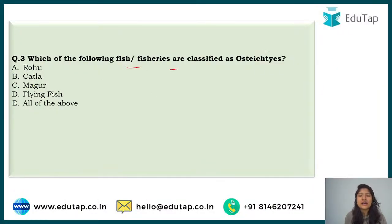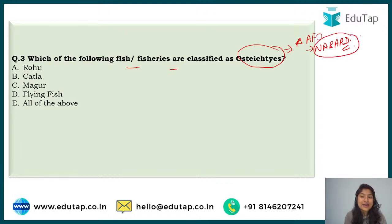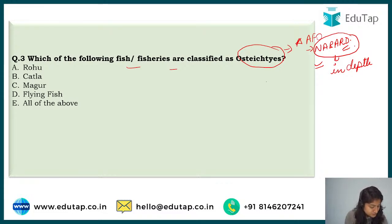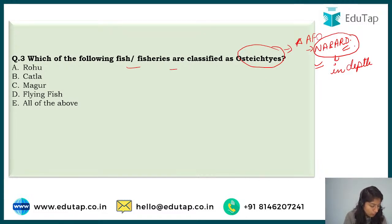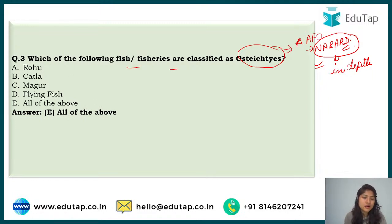Question three asks: which of the following fish are classified as Osteichthyes? This is very important for AFO, but even NABARD has started asking in-depth questions from this chapter, so do not ignore it. Ilakiya says D — flying fish. The correct answer is option E, that is all of the above.